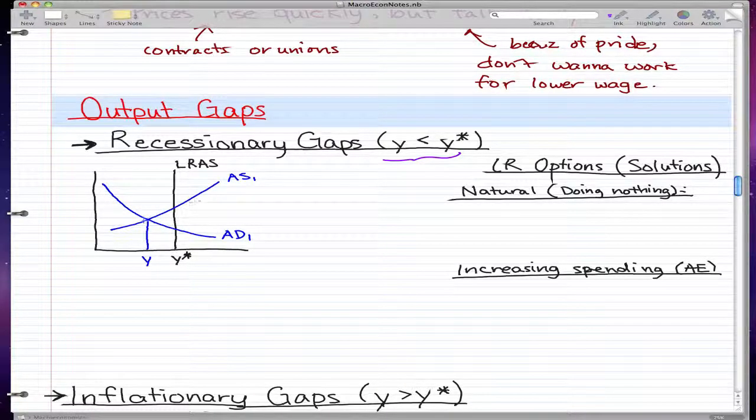This is reflected in the graph where y is less than y star, and when this happens, there is no equilibrium. AS is not equal to AD, and that is not equal to LRAS.